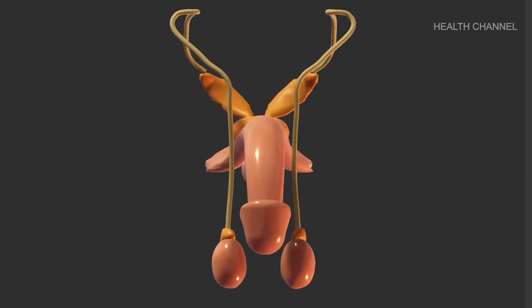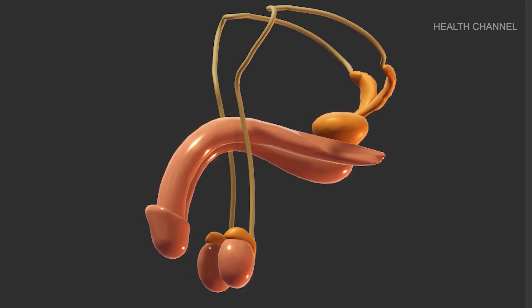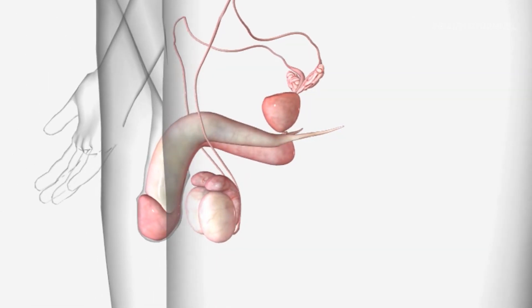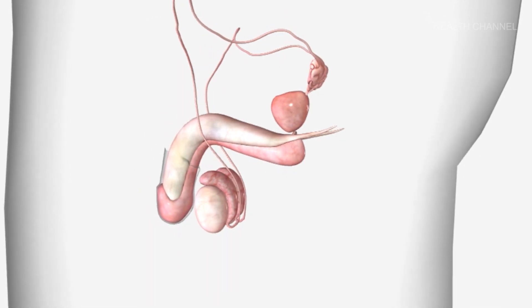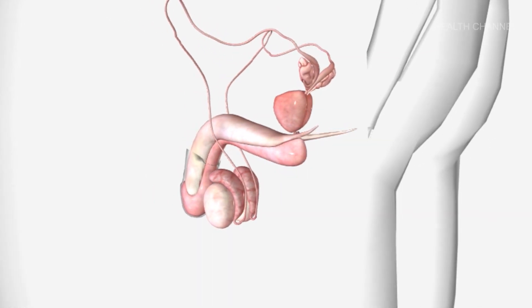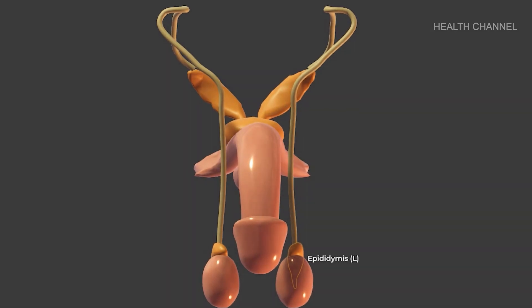Testosterone is the principal male sex hormone. Seminiferous tubules are coiled masses of tubes found within the testes. These tubules are in charge of creating sperm cells through a process known as spermatogenesis. The epididymis is a long coiled tube that sits behind each testicle.